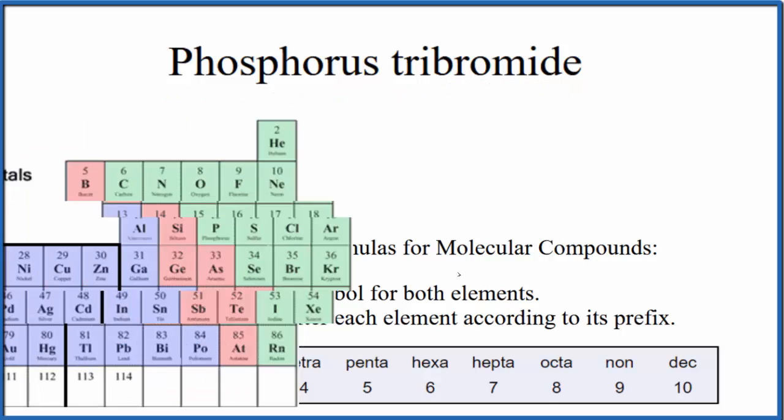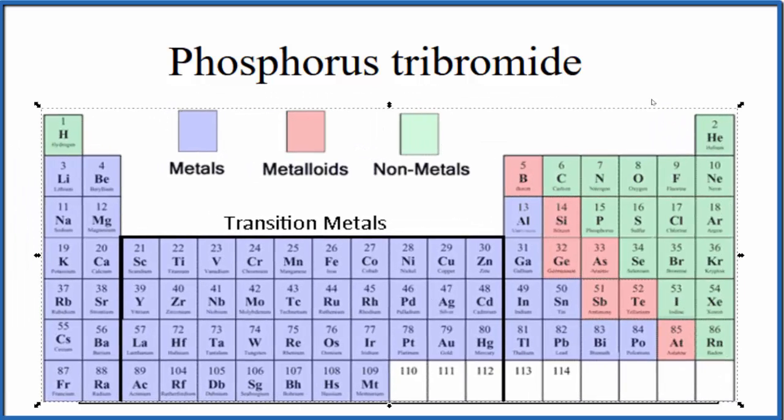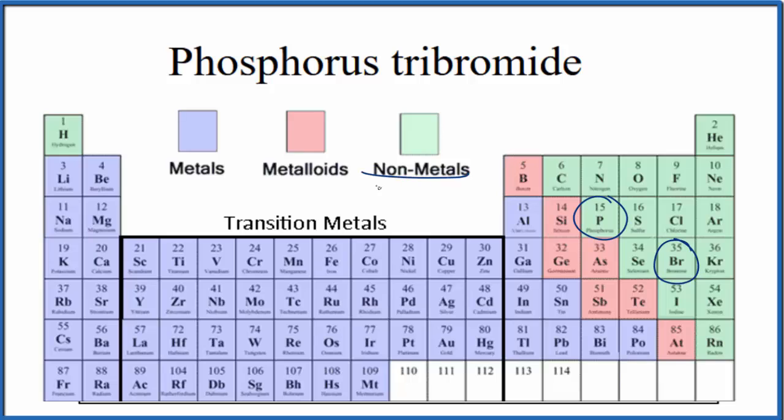So if we look at the periodic table divided up into metals, metalloids, and nonmetals, we can find phosphorus, that's right here, and then bromide, that's bromine, that's right here. So we have two nonmetals.